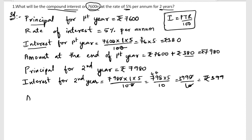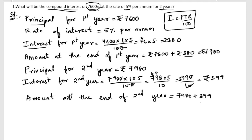Next, the amount at the end of the second year: we add the principal 7980 plus interest 399. Adding from the right: 9, then 17 carry 1, then 10 carry 1, then 13 carry 1, then 8. So the amount at the end of the second year is rupees 8379. Now we can find the compound interest.